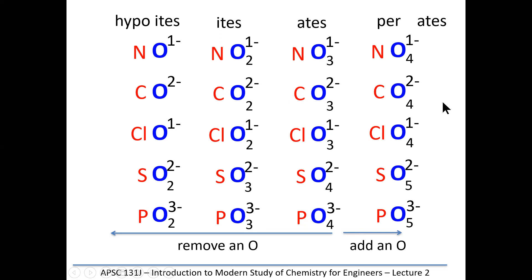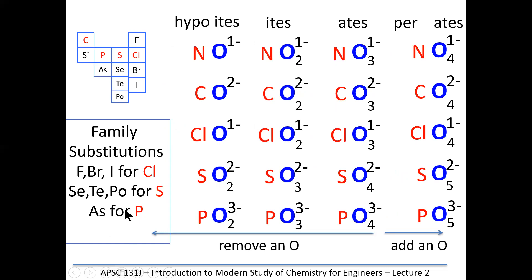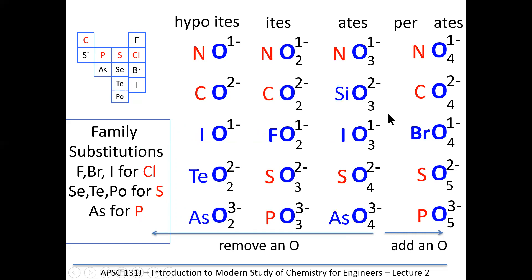Family substitutions again yield thousands more polyatomic ions. If you know chlorate, you know fluorate, bromate, and iodate. If you know sulfite, you know selenite, tellurite, and polonite. If you know hypophosphite, you know hypoarsenite. If you know hypoiodite, you know hypochlorite. All the blue entries are family substitutions: silicate, fluorite, hypotellurite, hypoarsenite, arsenate, perbromate — so now we literally have thousands of possible polyatomic ions to mix with all the different metals to produce millions of combinations.